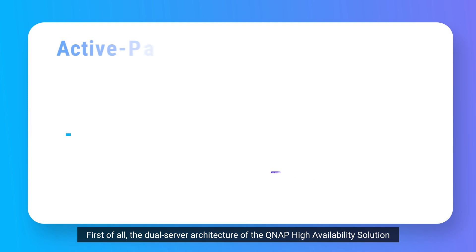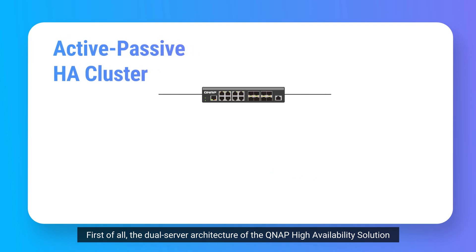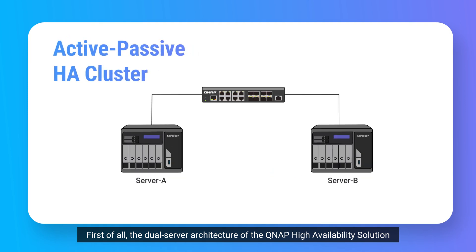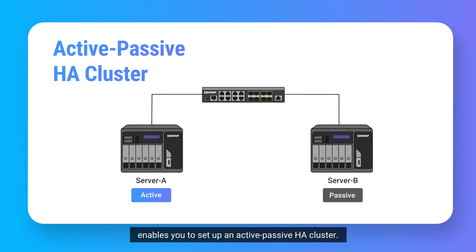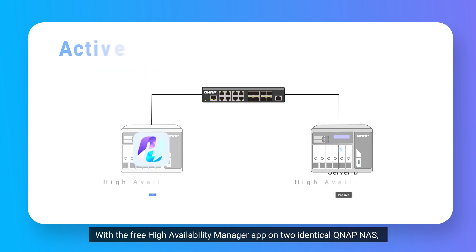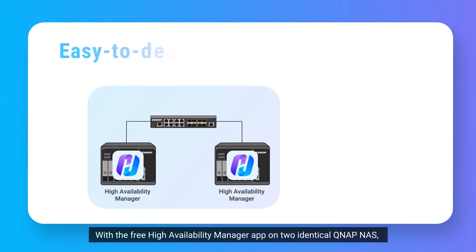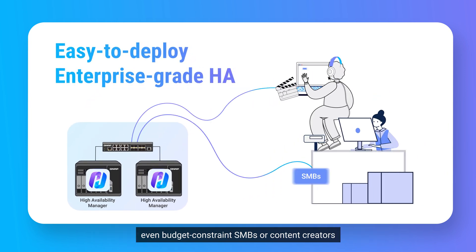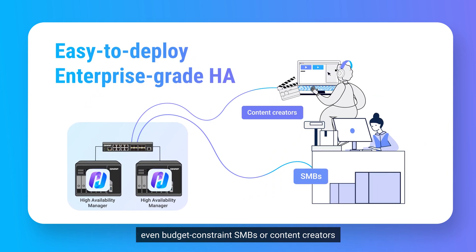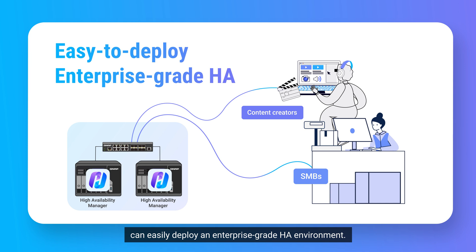The dual server architecture of the QNAP High Availability Solution enables you to set up an active-passive HA cluster. With the free High Availability Manager app on two identical QNAP NAS, even budget-constrained SMBs or content creators can easily deploy an enterprise-grade HA environment.